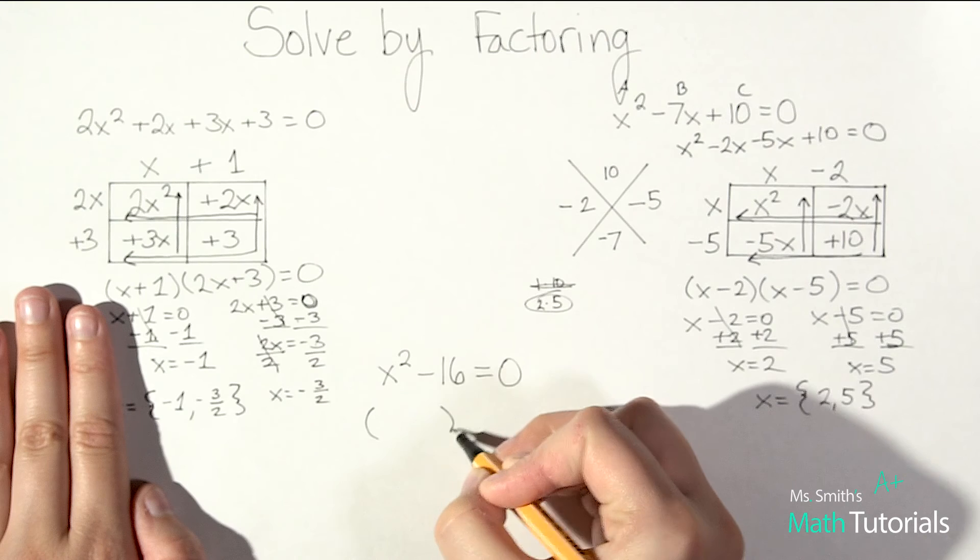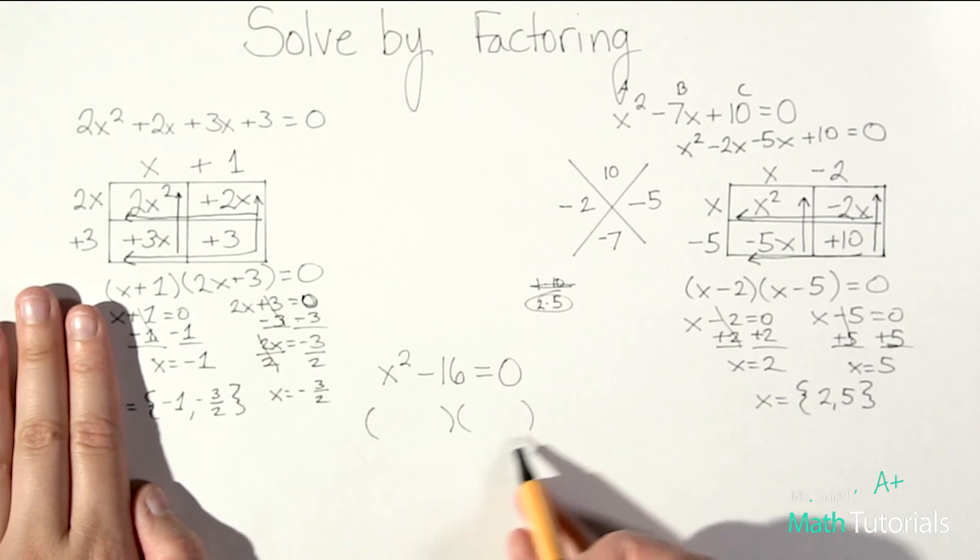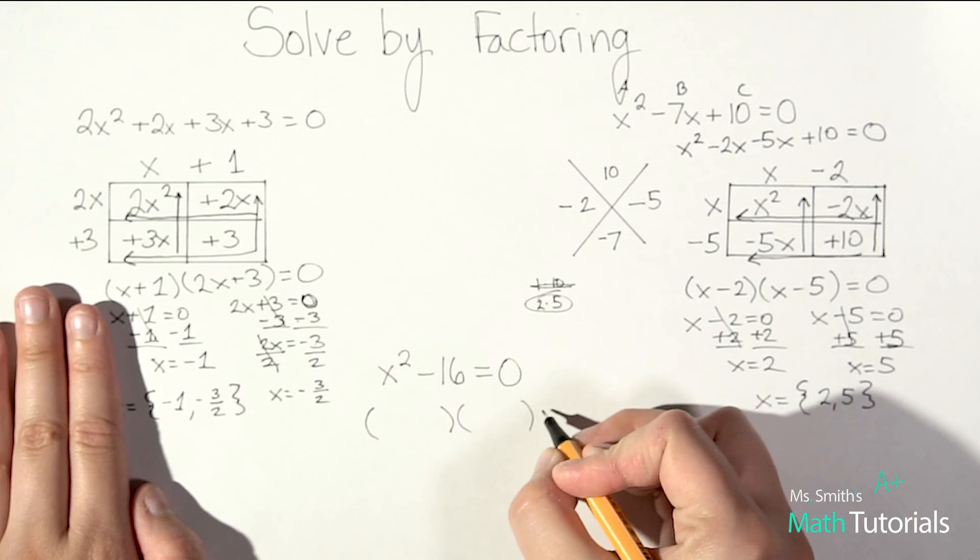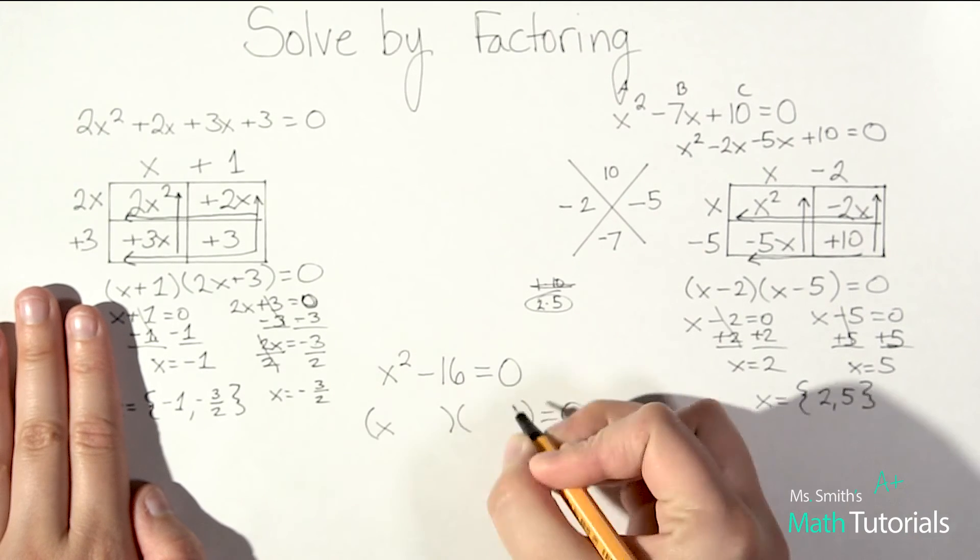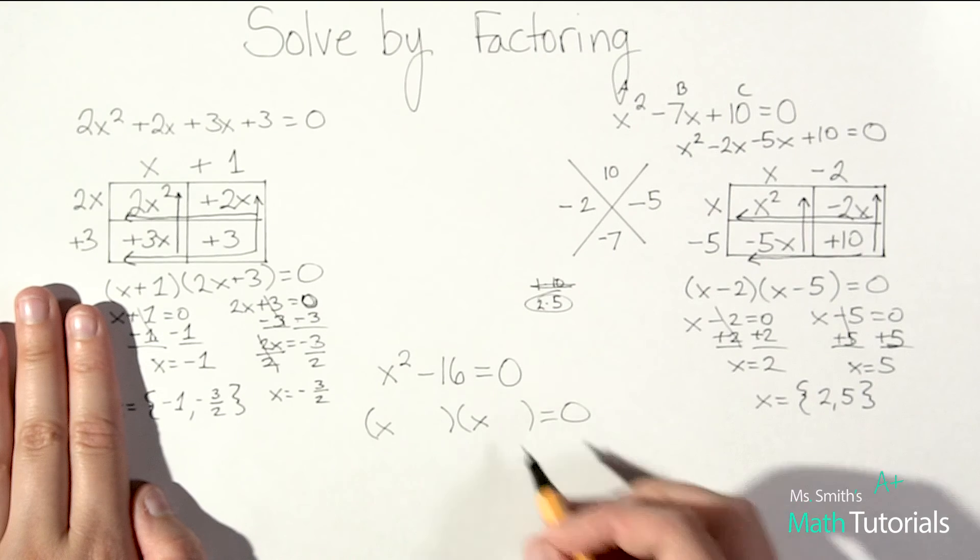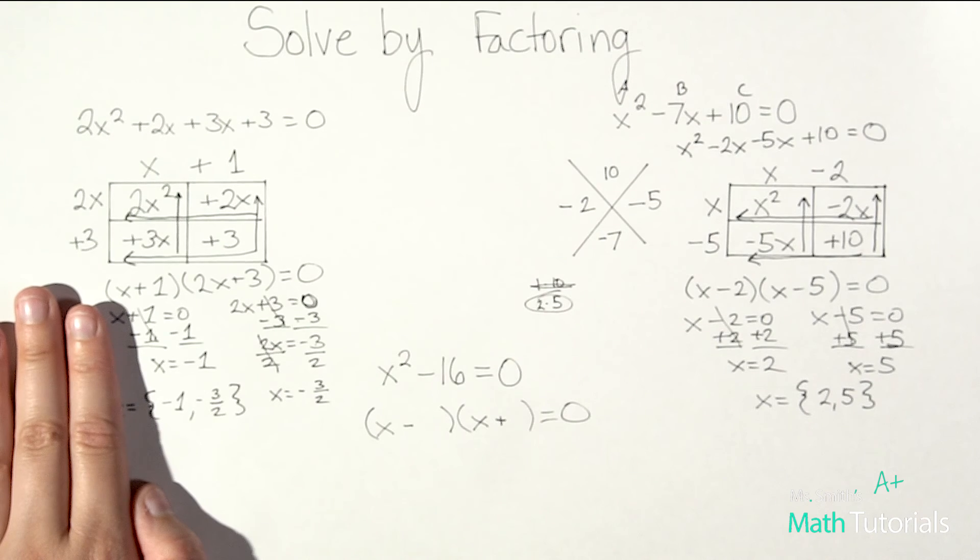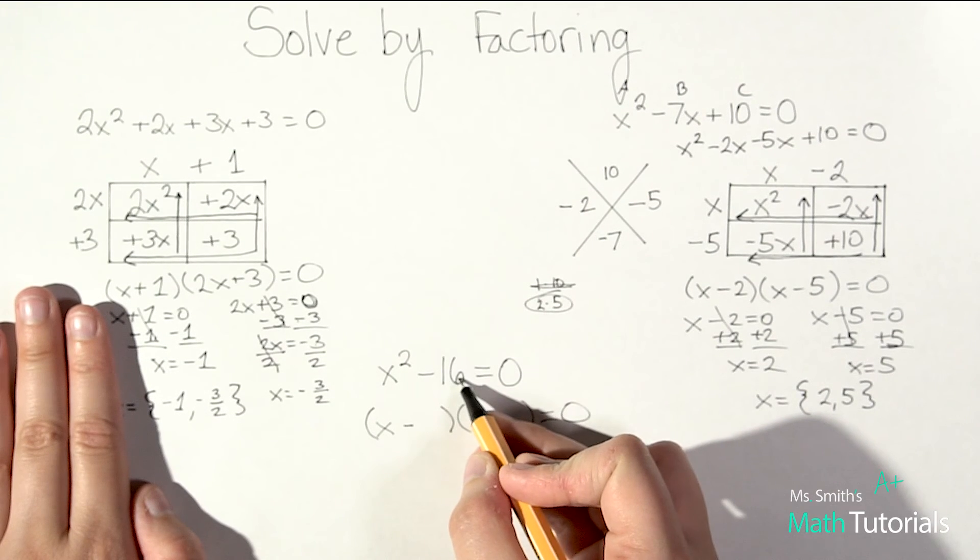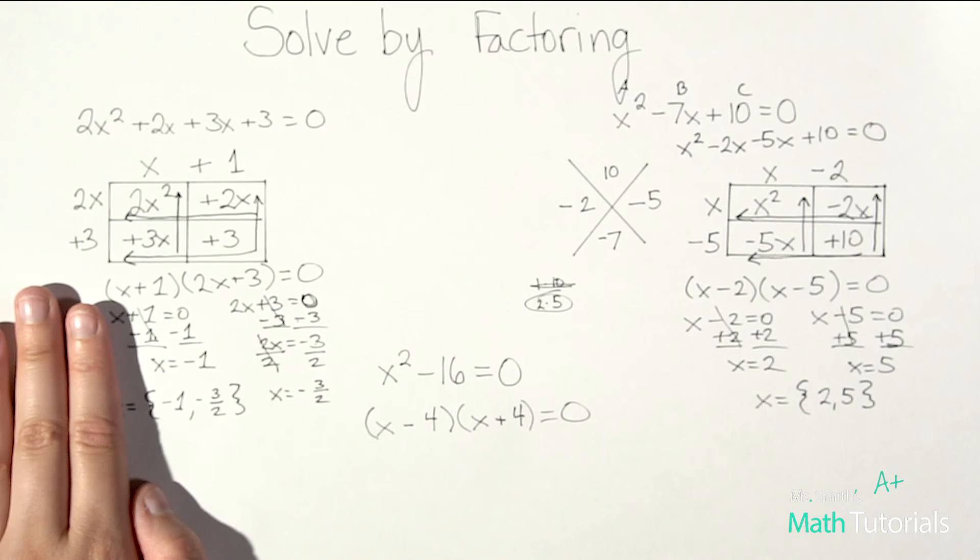If you're unsure of what I'm doing here, please go watch the video on a difference of perfect squares. That'll help you out. And I know both of my binomials will be equal to zero. So what's my square root of x²? That would just be x. So one here, one here. Because it's a difference, I'll have one negative, one positive. What's my square root of 16? That would be four. So I get one here and one here.